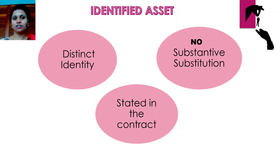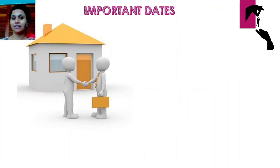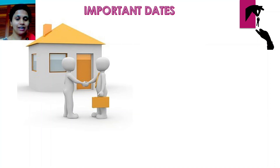So we are done with the topic of identified asset. An underlying asset will be considered an identified asset if it has a distinct identity, if it is clearly stated in the contract, and if the supplier has no substantive substitution rights. Before I move on, I want to cover another topic: important dates. The two dates I will be covering are date of inception and date of commencement.